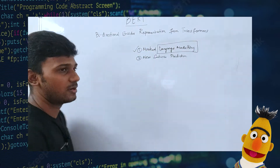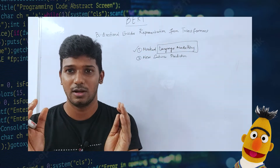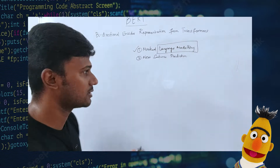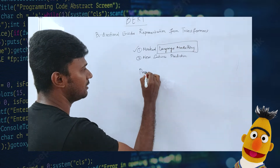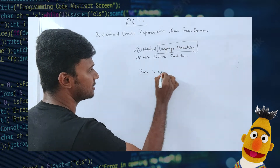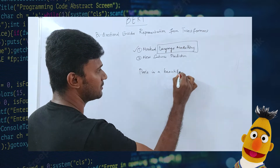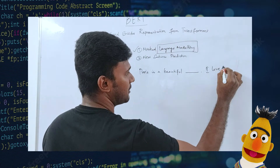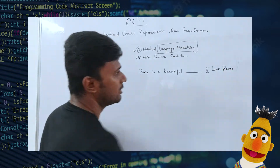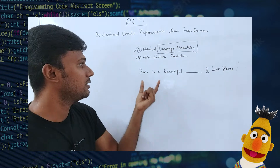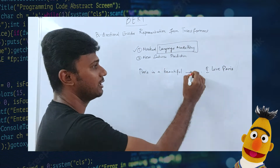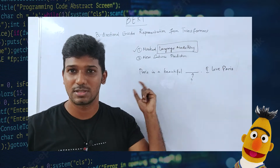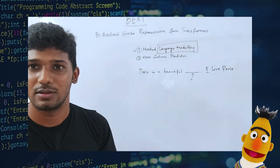Language modeling is nothing but given a set of words, you need to predict the next word. For example, given the sentence 'Paris is a beautiful ___', and then we have the sentence 'I love Paris'. Language modeling is about predicting what should be filled in that blank. This is basically called language modeling.